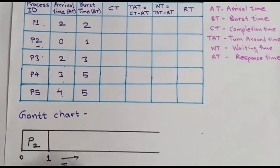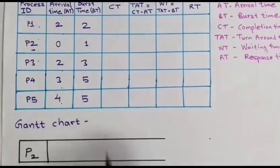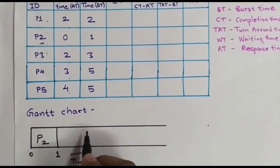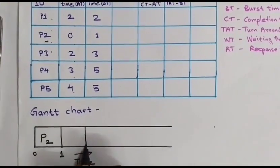So at time 1 we don't have any process in ready queue. And next process will come at 2. So till 1, 2, CPU would be idle.